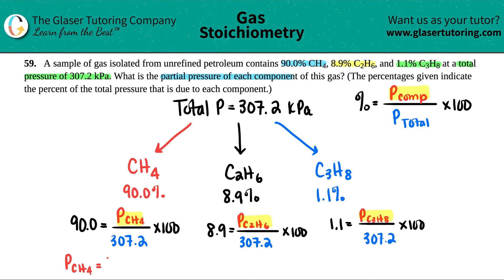So I get 276.48, and the units would have to go with what the total pressure units is. So since the total pressure was in kilopascals, this is in kilopascals. Let's do it for the other one. 8.9 divided by 100, and then times by 307.2. The pressure of C2H6 equals 27.3408, and that's kilopascals.